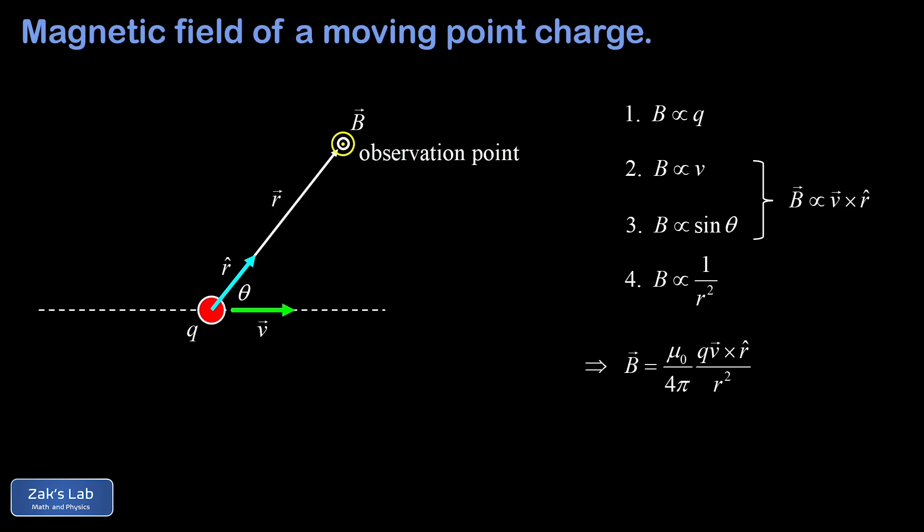So there it is, the field generated by a moving point charge with the caveat that it's an approximation. We write it as B equals mu naught over 4 pi times Q times the cross product of V crossed into r hat divided by r squared. The constant of proportionality is called the permeability of free space mu naught, and mu naught turns out to be 4 pi times 10 to the negative 7 tesla meters per amp. This constant comes with a caveat because it was slightly adjusted in 2019 when the elementary charge E was fixed to nine decimal places in the SI system, but most textbooks still use the 4 pi.